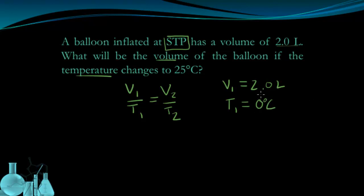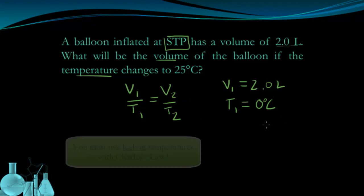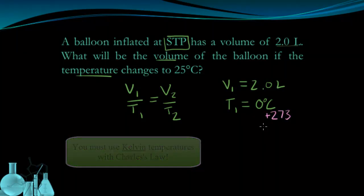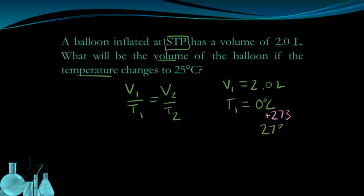Now, there's a very important thing that needs to happen right now. Charles's Law only works with Kelvin temperatures. So if you have Celsius, you have to convert it. And Celsius temperatures can be converted to Kelvin by just adding 273. So that's going to change my T1 to 273 Kelvin.